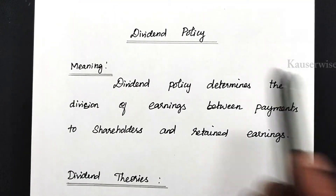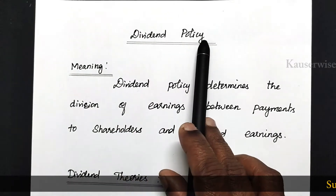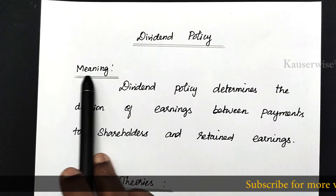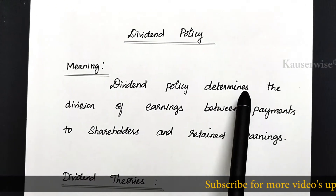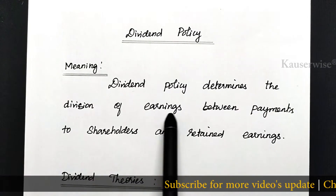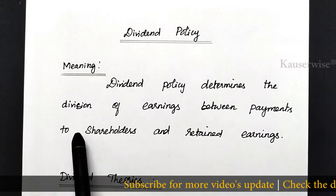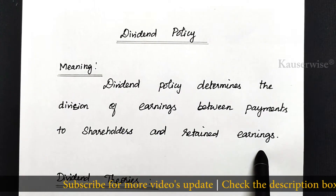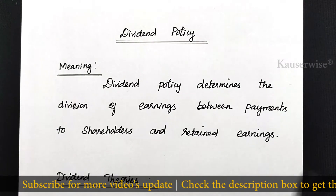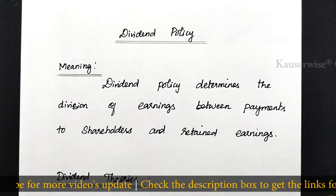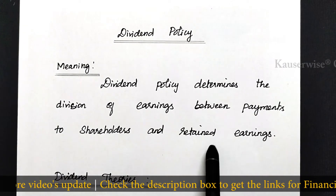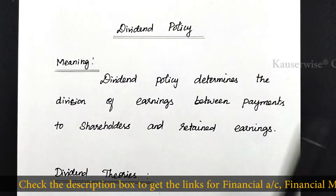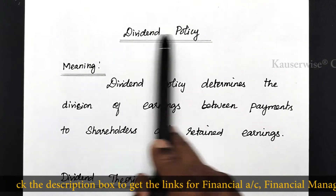Before we see the numerical problem on dividend policy, let us try to understand the basic concept. The first one is meaning. Dividend policy determines the division of earnings between payments to shareholders and retained earnings. The decision is whether to distribute the entire profit to shareholders or to retain some proportion — that decision is called dividend policy.